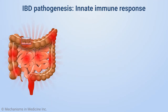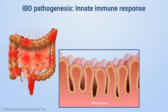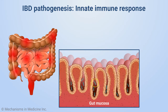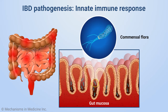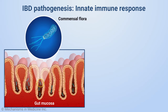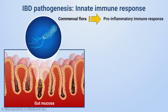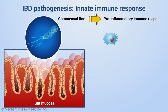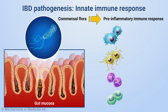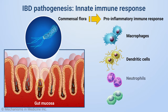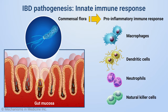IBD activates the immune cells of the gut mucosa of IBD patients, resulting in an overactive immune response to commensal flora. This ultimately results in an innate pro-inflammatory immune response driven by immune cells, including macrophages, dendritic cells, neutrophils, and natural killer cells.